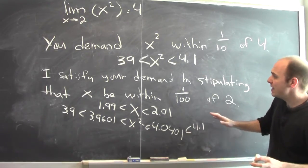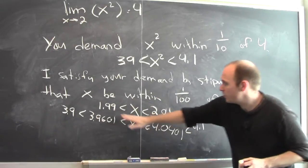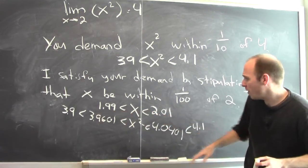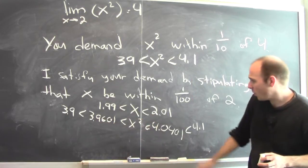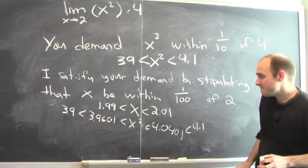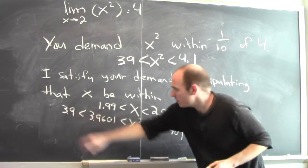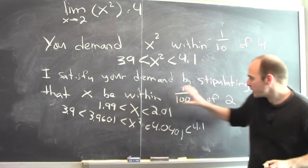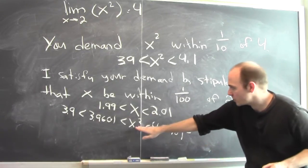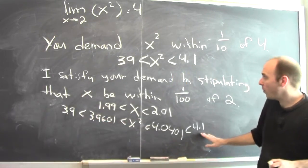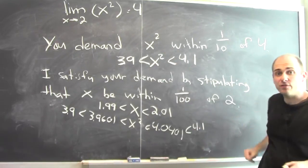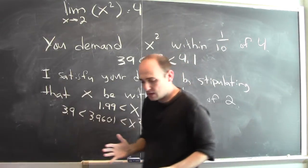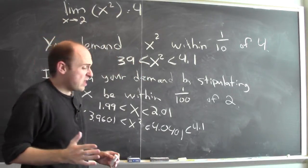Notice what happened here. If x is within a hundredth of 2, then x is between 1.99 and 2.01. But if x is between 1.99 and 2.01, then x squared is between 3.9601 and 4.0401. Since x squared is bigger than 3.9601, it's bigger than 3.9; and since it's smaller than 4.0401, it's smaller than 4.1. So demanding that x be within a hundredth of 2 forces x squared to be between 3.9 and 4.1 — in other words, within a tenth of 4. So if your demand is that x squared be within a tenth of 4, I can satisfy that demand by simply requiring x to be within a hundredth of 2.